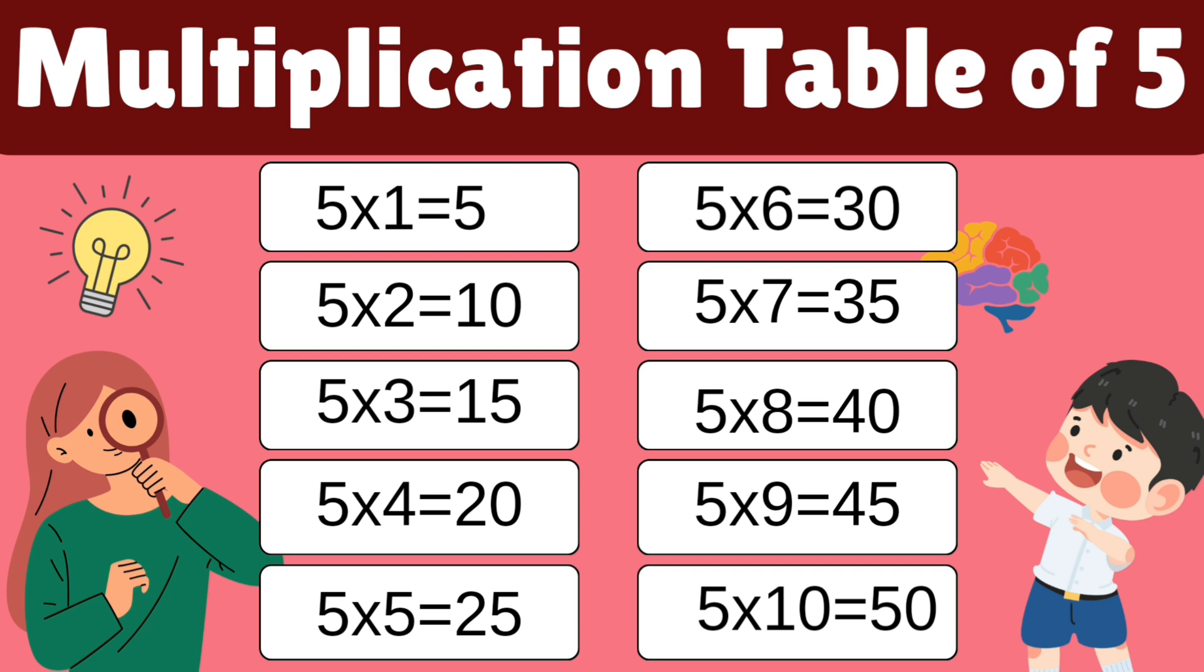To help it stick in our minds: 5×1=5. Easy, right? 5×2=10. Notice how the numbers are increasing by five each time. 5×3=15, 5×4=20, 5×5=25, 5×6=30, 5×7=35, 5×8=40, 5×9=45, 5×10=50. Good job, children!